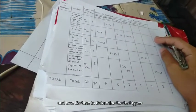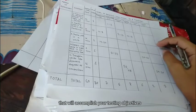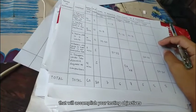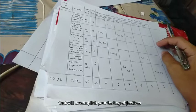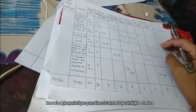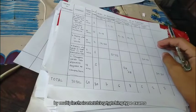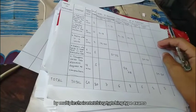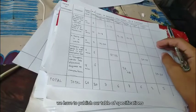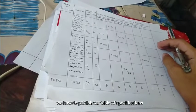And now it's time to determine the test types that will accomplish your testing objectives. For example, knowledge questions can be obtained by multiple choice tests or matching type exams. And then lastly, we have to publish our table of specifications.